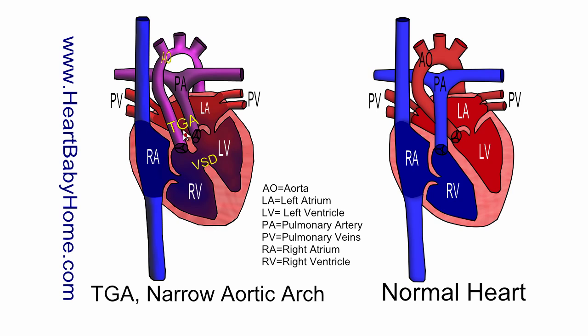TGA, transposition of the great arteries — that's where the positions of the great vessels are switched so that the aorta is coming out of the right ventricle and the pulmonary artery is coming out of the left ventricle. Whereas in a normal heart, the aorta carries oxygen-rich blood from the left ventricle and the pulmonary artery carries oxygen-poor blood to the lungs from the right ventricle.